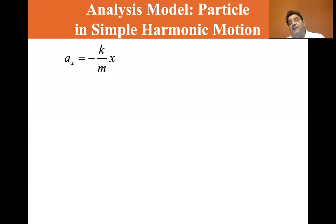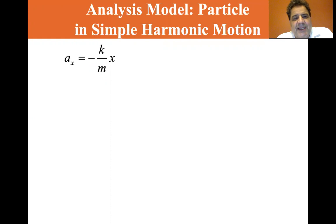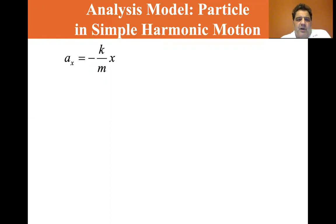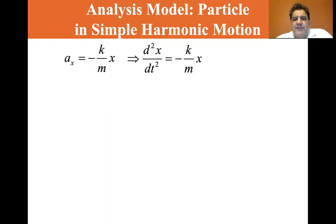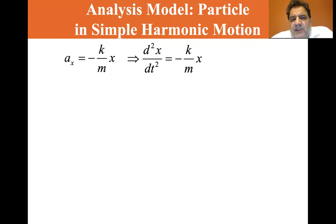We're at section 15.2, particle in simple harmonic motion. Let's pick off where we left off. We left off where acceleration is equal to minus k over m times x. Minus kx is the force from Hooke's law, and we know that the second derivative of position, d²x/dt², is acceleration.